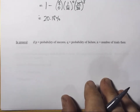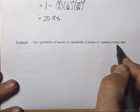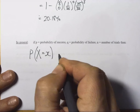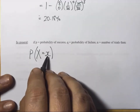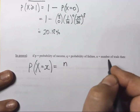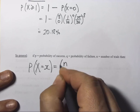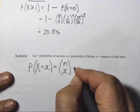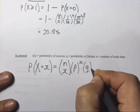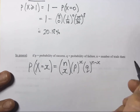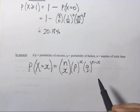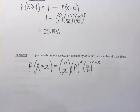Last thing on this page: the general formula. If P is the probability of success, Q is the probability of failure, and N is the number of trials, then for a binomial distribution, the probability that our random variable X equals little x is: N choose x, times P raised to the x, times Q raised to the N minus x. Little x just represents a number like zero, one, two, three. If we got one success, Q would be raised to N minus 1, because you must have had that many failures to make up your total.